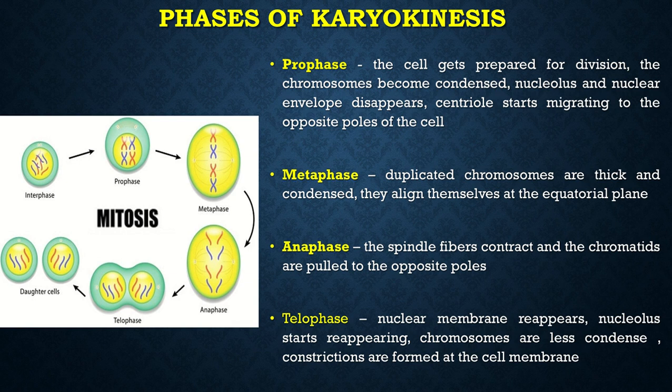Karyokinesis starts with prophase, where the cell gets prepared for division — it's a preparatory phase. The chromosomes here become highly condensed. The nucleolus and the nuclear envelope disappear, and the centrioles start migrating to the opposite poles of the cell.